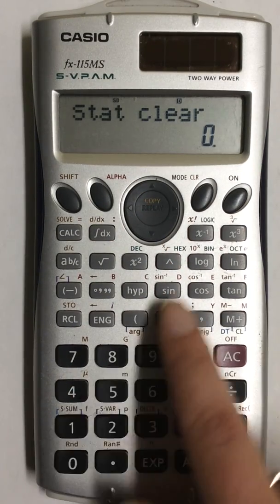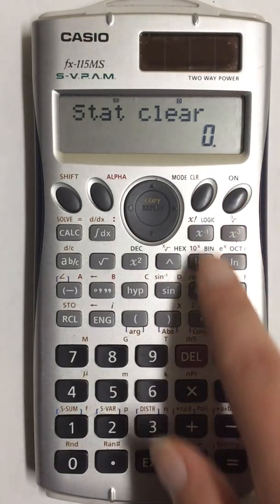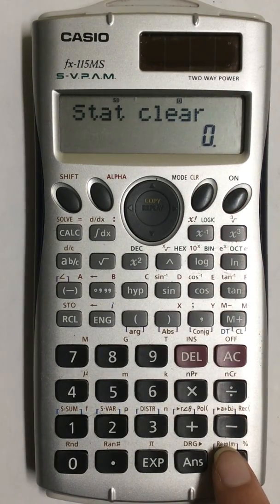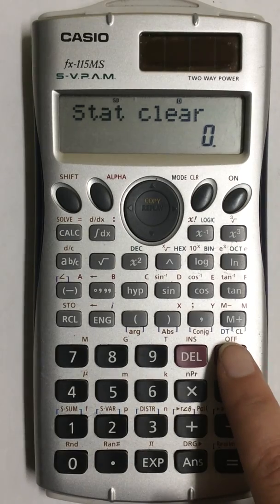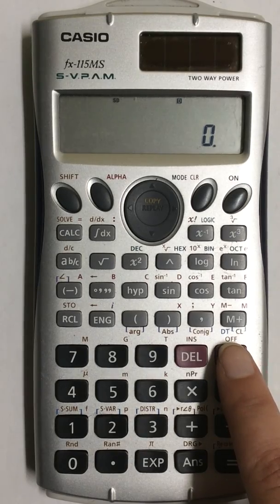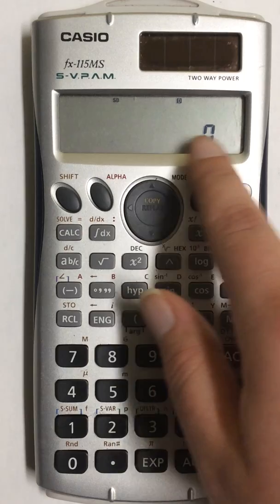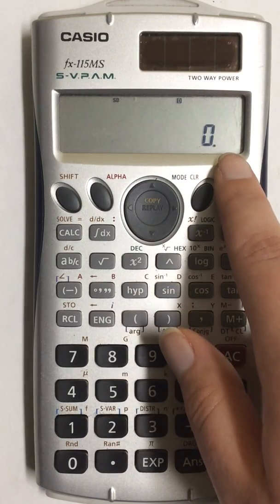So the cursor is still blinking on the screen, so you're going to press equals and then press AC. So that will clear all of the numbers in your calculator.